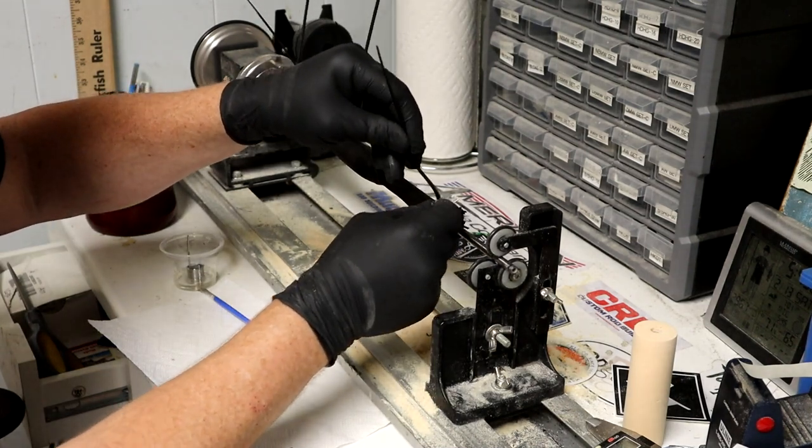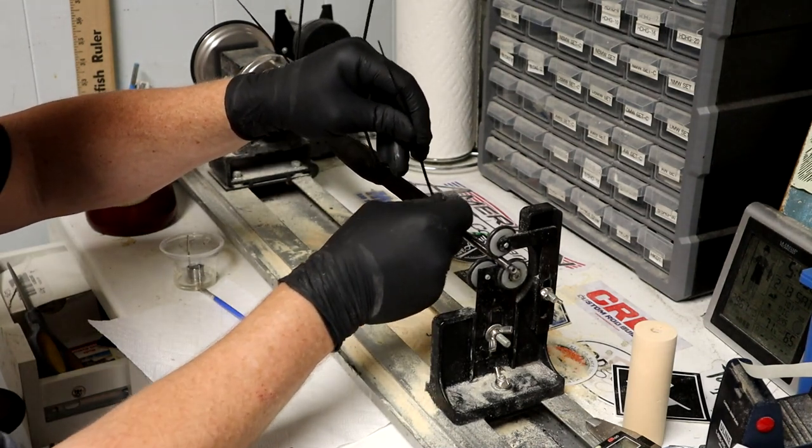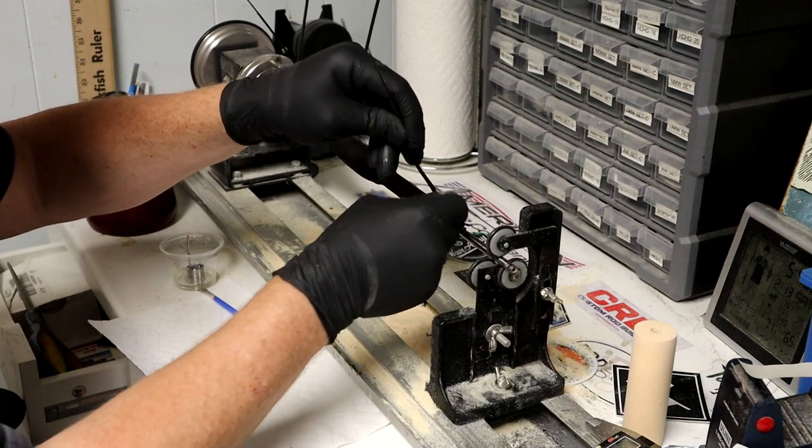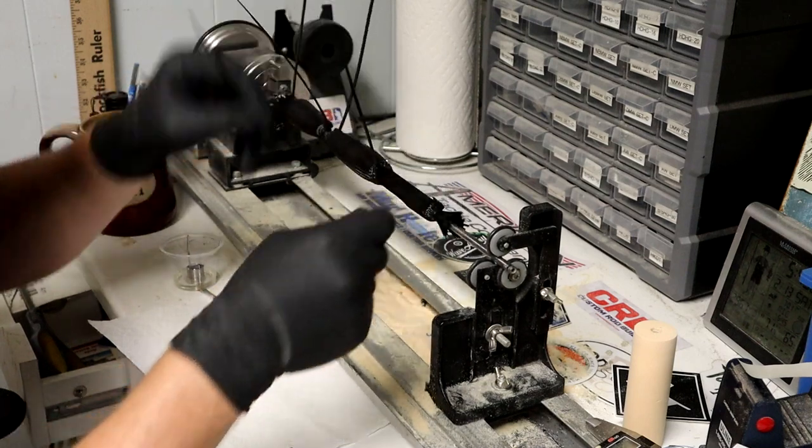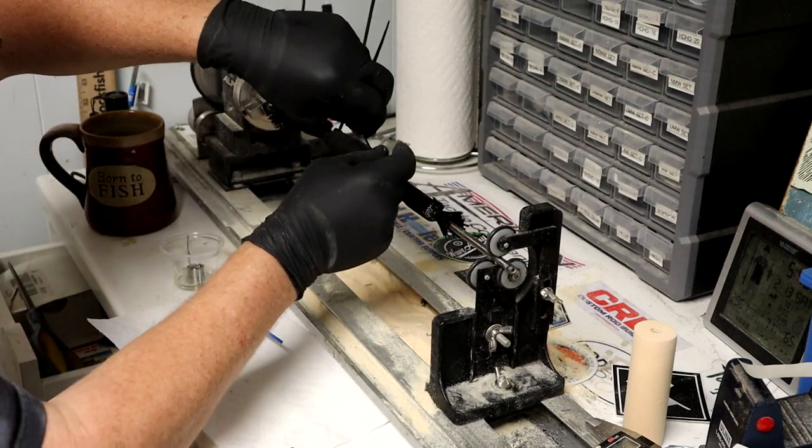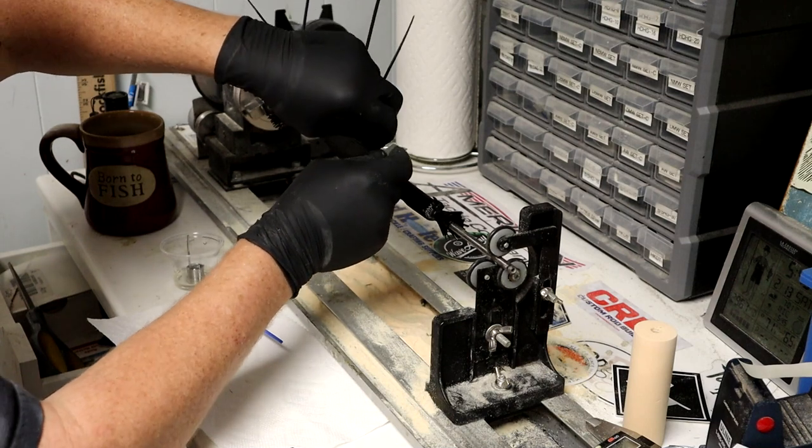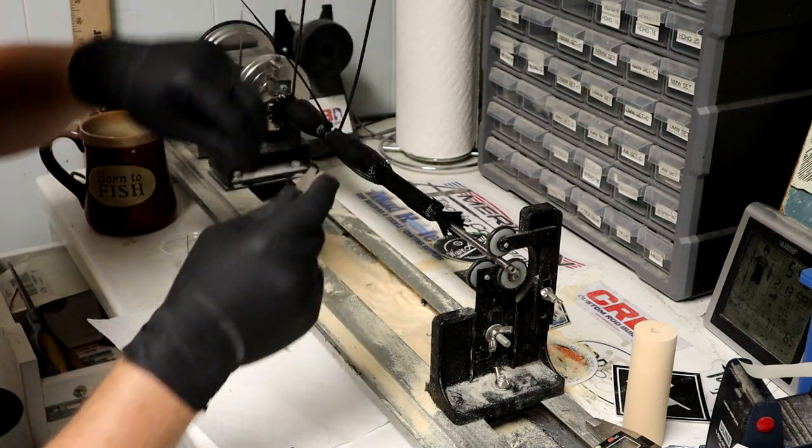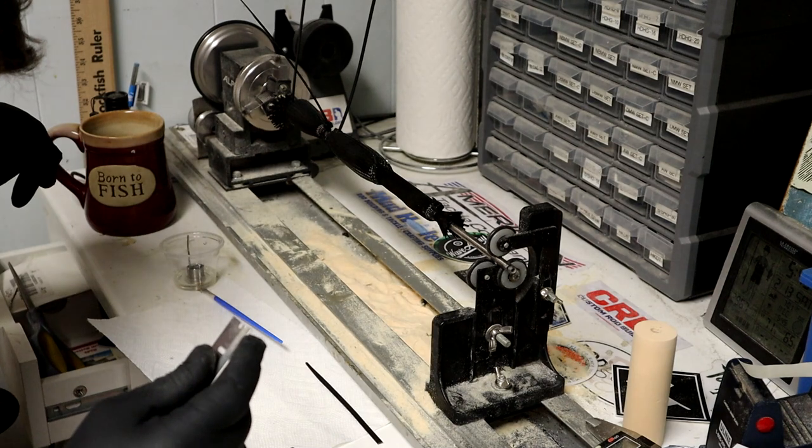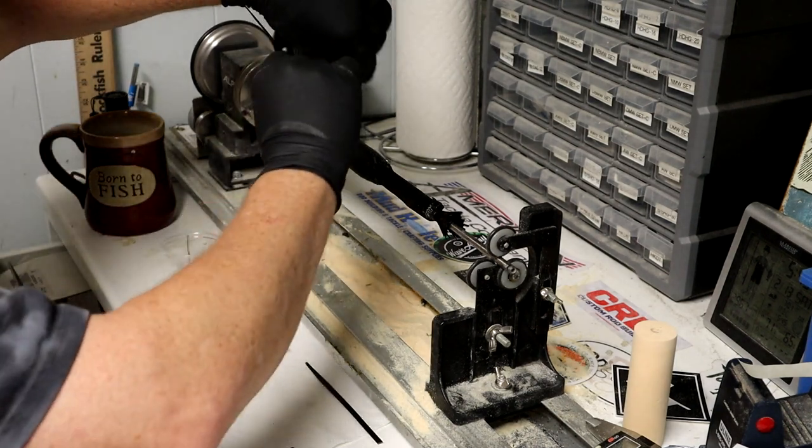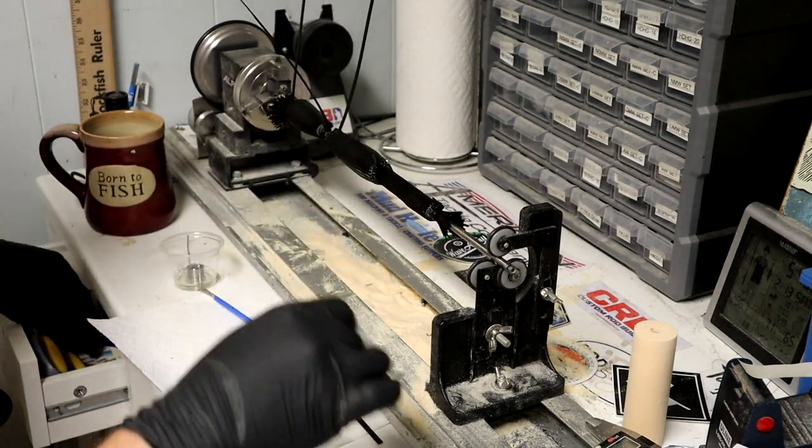I'm using a razor blade at first and then I go to my scissors. Just be careful not to hit the carbon fiber at this point because it's very fragile and you can mess up the weave. Once that epoxy is hardened it's nearly impossible to mess it up.